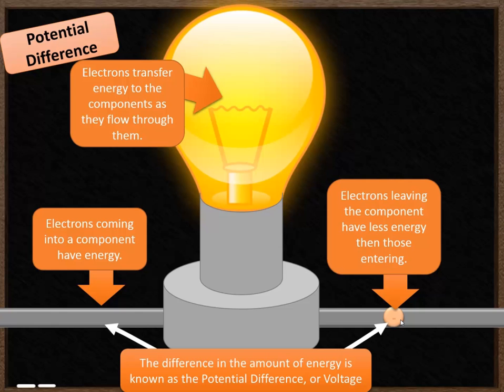You can measure potential difference for a component, for a series of components or the whole circuit. So how much energy the electrons lose going all the way through the circuit. The electrons will always have enough energy to get back to complete the circuit. So they don't leave and have no energy at all. They always have just enough energy to get round the circuit.